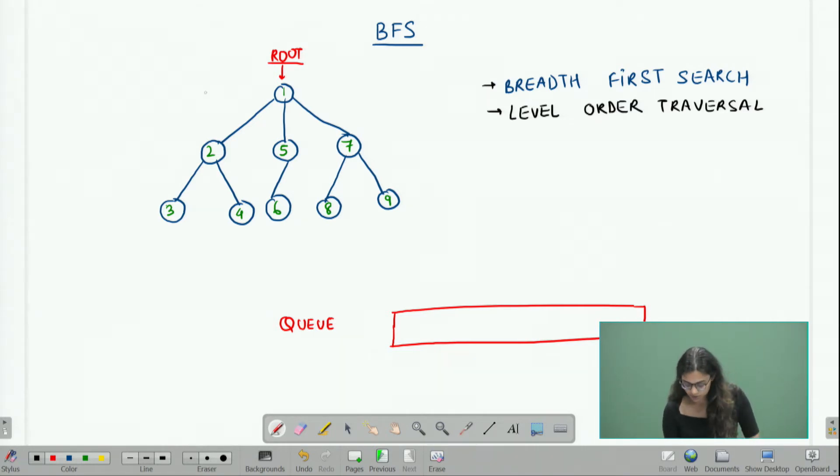First we want to traverse all the nodes on level one, then we want to traverse all the nodes on level two, and then we want to traverse all the nodes at level three. Since this tree only has three levels I only have to go three levels deep. If the tree has more than three levels, you will have to do the same for all the following levels.